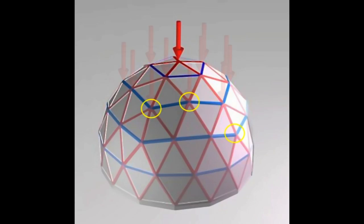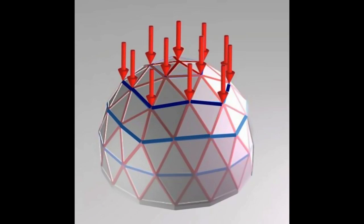If we load up and have more like a snow load—a lot of points—what that does is it makes the whole top compressive but it moves that tension line further down the dome, so now there's more tension further down than there was before.